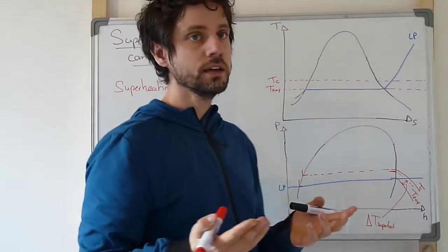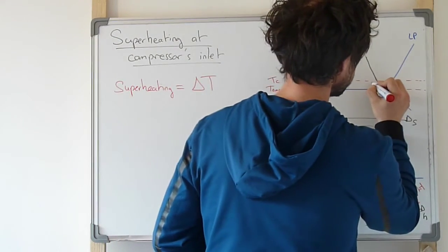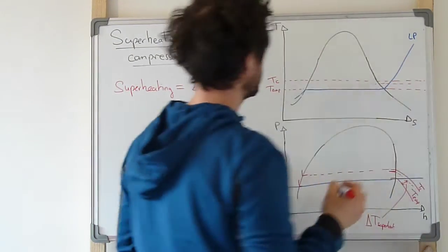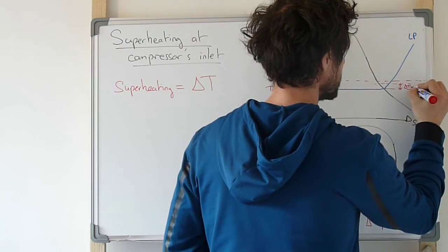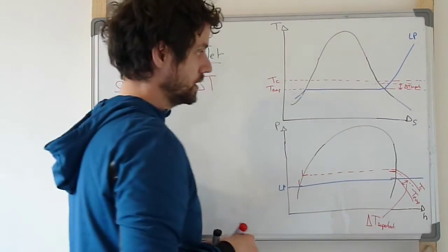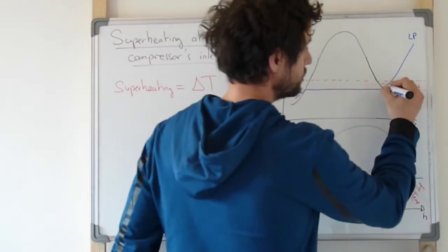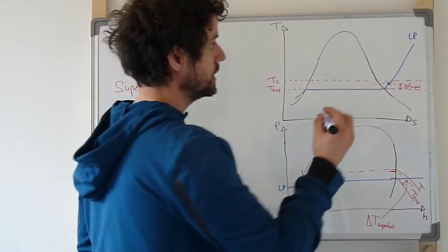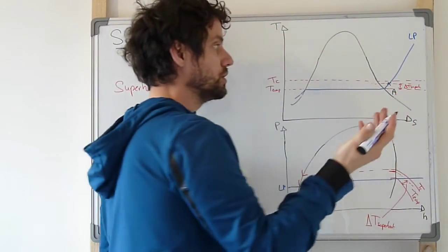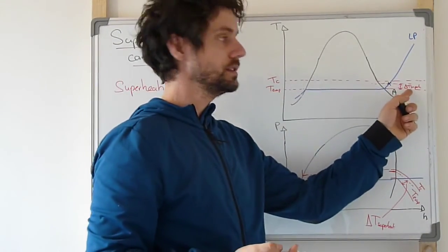We can see the same thing, for example, on the TS diagram. And in that case, we can write the difference of temperature of superheating this way. And so it means that point A, the inlet of the compressor, will not be there but there. So at the cross section between the low pressure isobaric line and this temperature that corresponds to T_evap plus delta T of superheating.